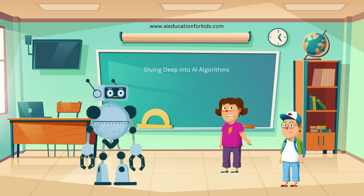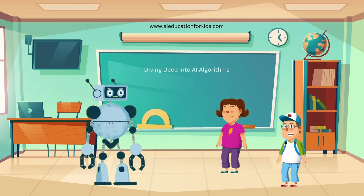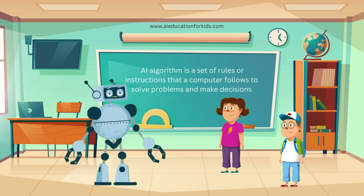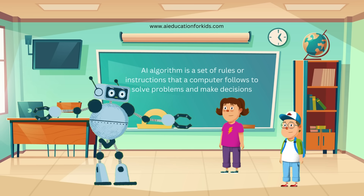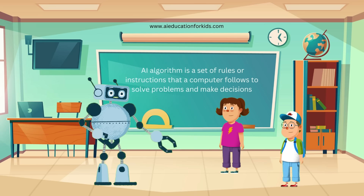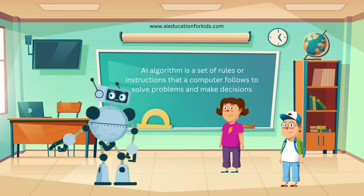Yes Randy! I love learning new things! Me too! Let's get started! So, an AI algorithm is a set of rules or instructions that a computer follows to solve problems and make decisions. They help computers learn from data and make smart choices.